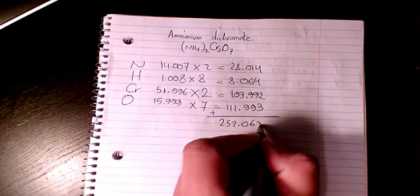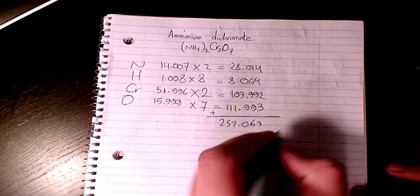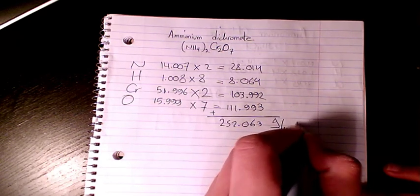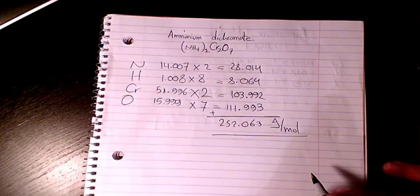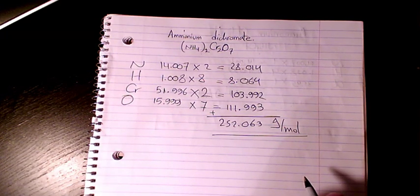.063 grams per mole. So that's the molar mass or molecular weight of ammonium dichromate.